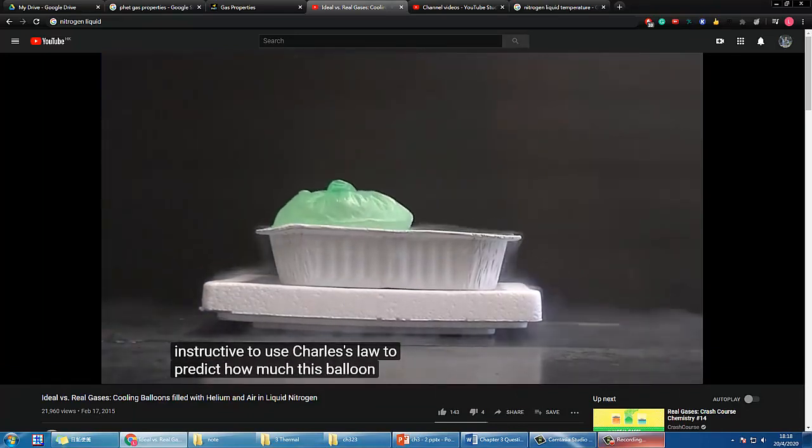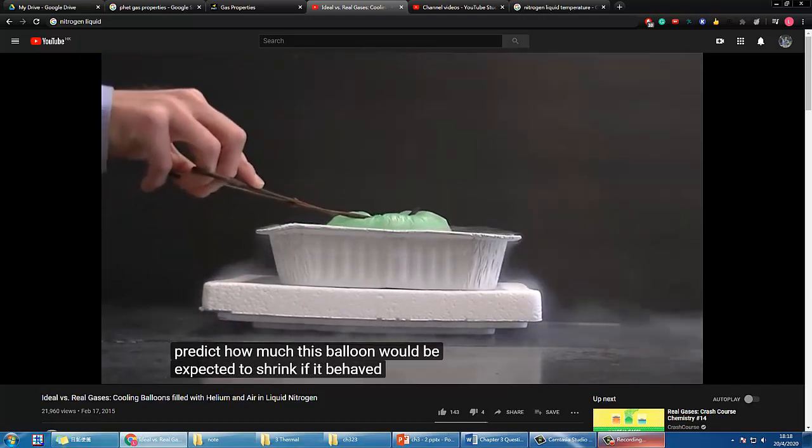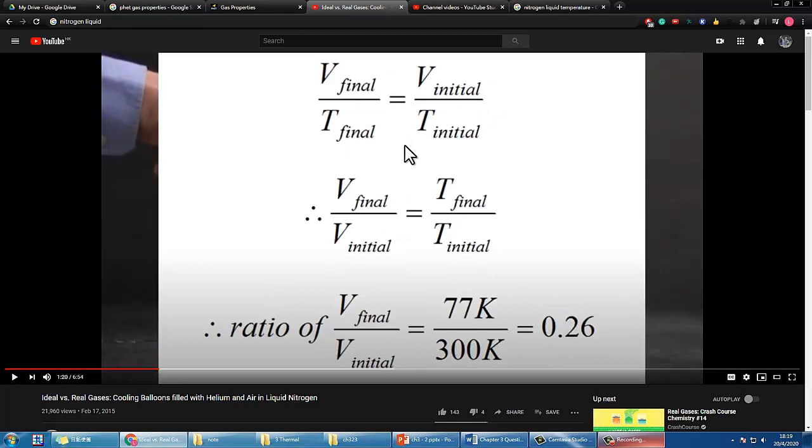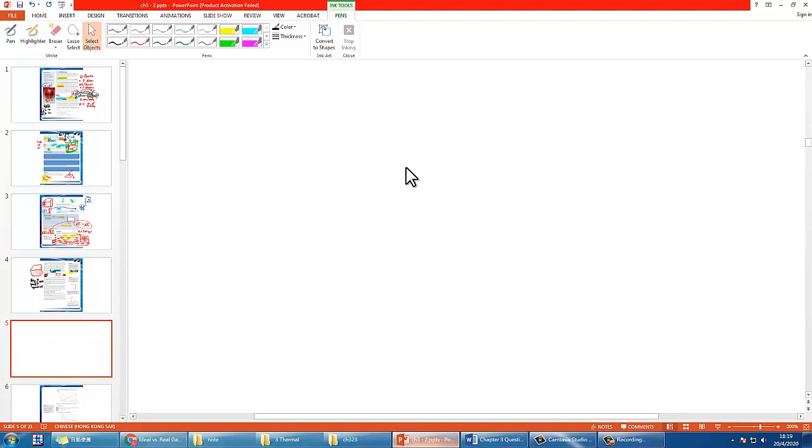Balloon goes down, the volume of the balloon goes down. I think it's instructive to use Charles's law to predict how much this balloon would be expected to shrink if it behaved ideally. If we start with Charles's law using the relationship between volume and temperature then you should be able to get it. I will recommend you to try yourself or maybe I'll just try here to help you figure it out. If you don't remember Charles's law that's fine as long as you remember PV equals nRT.